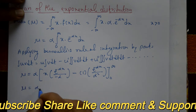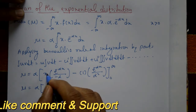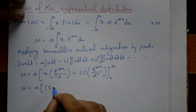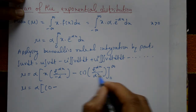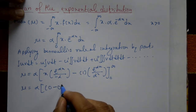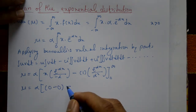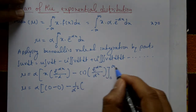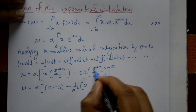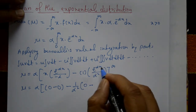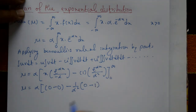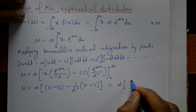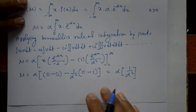Now μ equals α into: first put x equal to infinity (upper limit) — infinity into e raised to minus infinity is zero; minus put lower limit x equal to zero — this bracket becomes zero. Then minus sign, and 1 by α squared is constant taken outside; put x equal to infinity — e raised to minus infinity is zero; minus put x equal to zero — e raised to zero is one.